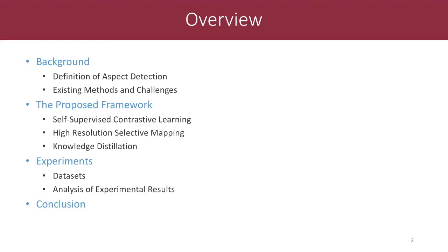First I will introduce the background of aspect detection, including its definition, existing methods, and challenges. Then I will move on to the proposed framework. Our work has three key components: self-supervised contrastive learning, high-resolution selective mapping, and knowledge distillation. I will introduce the experiments, including the datasets and analysis of experimental results. Finally, I will conclude this work.